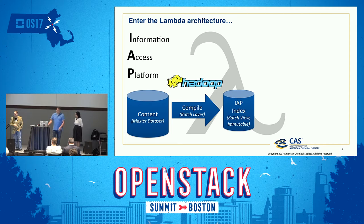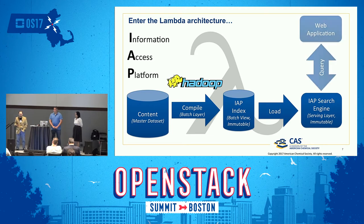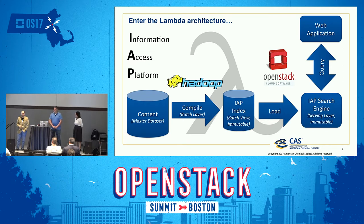The interesting parts come later in the Lambda architecture, where we talk about the serving layer. This is where we load that IAP index — the immutable batch view — into an IAP search engine, and then use that to answer the customer's queries. Unsurprisingly, given the venue, we're using OpenStack to power this. We've done this architecture on physical hardware before in a cluster computing setting. What's new is that we're bringing it to the OpenStack ecosystem because we needed the power and flexibility to right-size our solutions as we build out our portfolio of products.